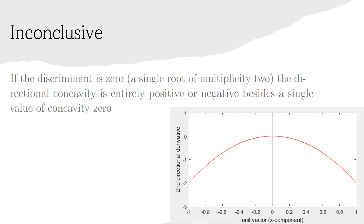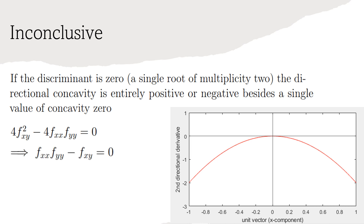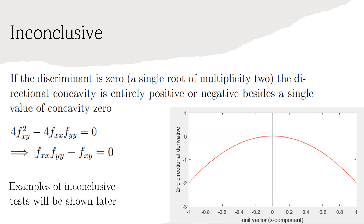If the discriminant is 0, then the quadratic has a single root of multiplicity 2. For our quadratic expression, this indicates that the directional concavity is either entirely positive or negative, besides a single value having concavity 0. If our quadratic expression's discriminant is 0, it can be rewritten to resemble what we saw in the second derivative test. It isn't immediately obvious why the discriminant being 0 results in an inconclusive test. For this reason, there will be animated examples demonstrated later in the video.